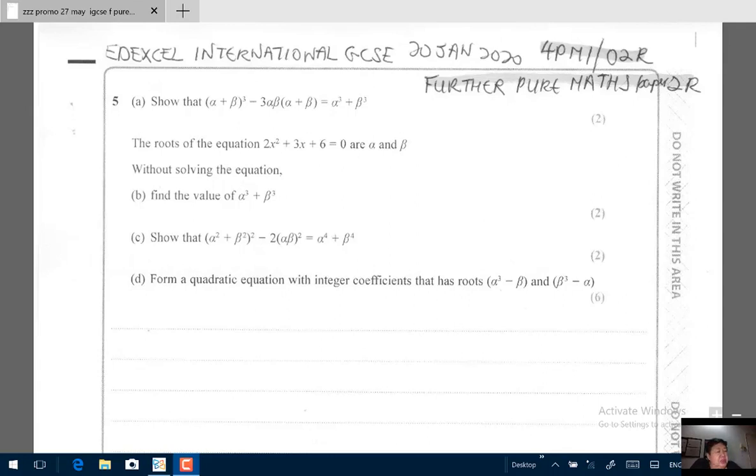Question 5a says show that (α+β)³ - 3αβ(α+β) = α³ + β³. This is a question involving roots of quadratic equation. I'd like to point out to you α+β is actually sum of roots.